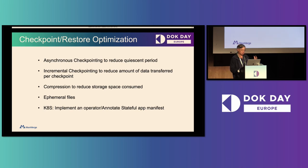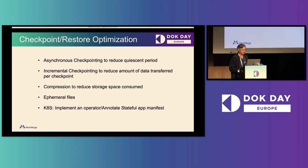Just implementing this on CRIU alone is not sufficient because the overhead checkpointing time is excessive. So we've done other enhancements like asynchronous checkpointing to reduce the quiescent period and allow the CPU and GPU to resume operation as quickly as possible. We've also implemented incremental checkpointing to minimize the amount of data transfer, and compression technology to minimize the consumption of storage or memory during checkpoints. Lastly, we also addressed ephemeral files — some stateful applications use the local disk ephemeral files, and we have to checkpoint all of that. We implement this all as a Kubernetes operator, and you can pick your favorite stateful app and update the manifest so that checkpoint restore is automatically invoked.